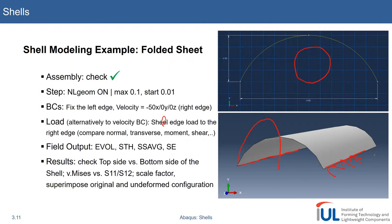The field output will add some things in the field output which are not checked by default. So the element volume, the section thickness, the average stress, and the in-section strains. This is useful or of interest if you do shell type problem modeling.